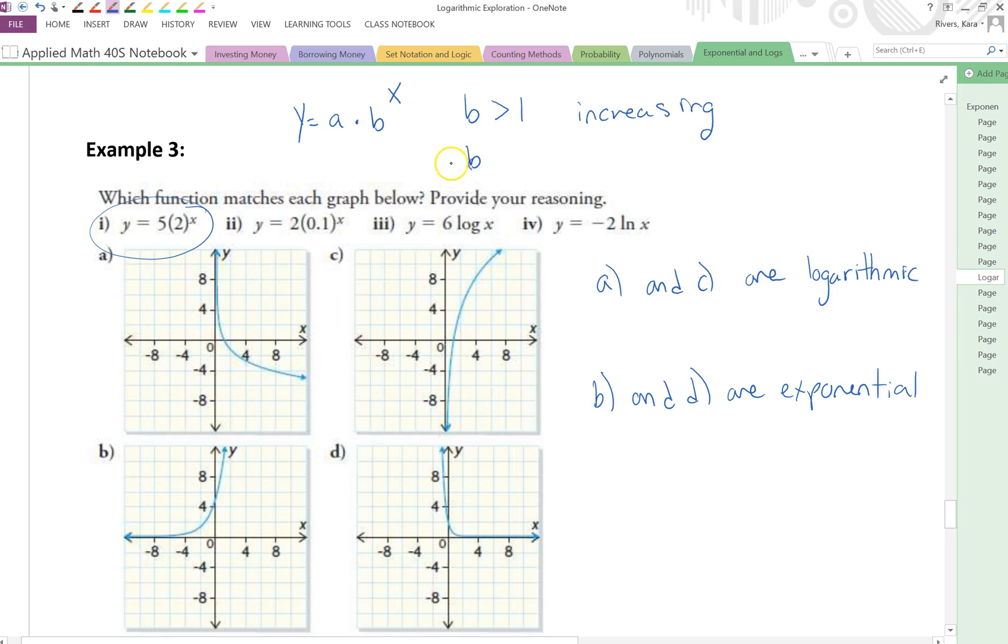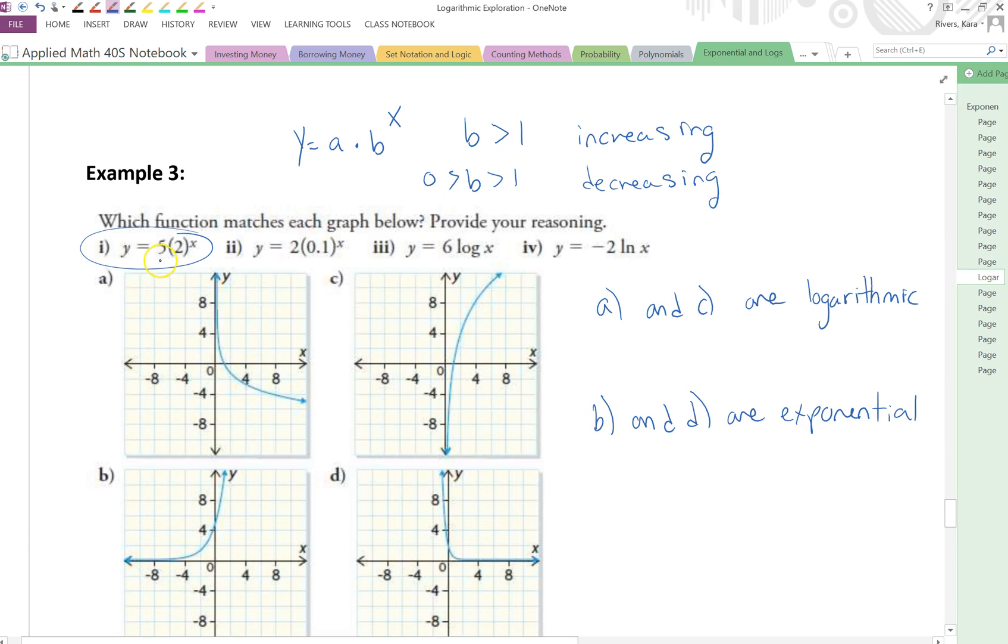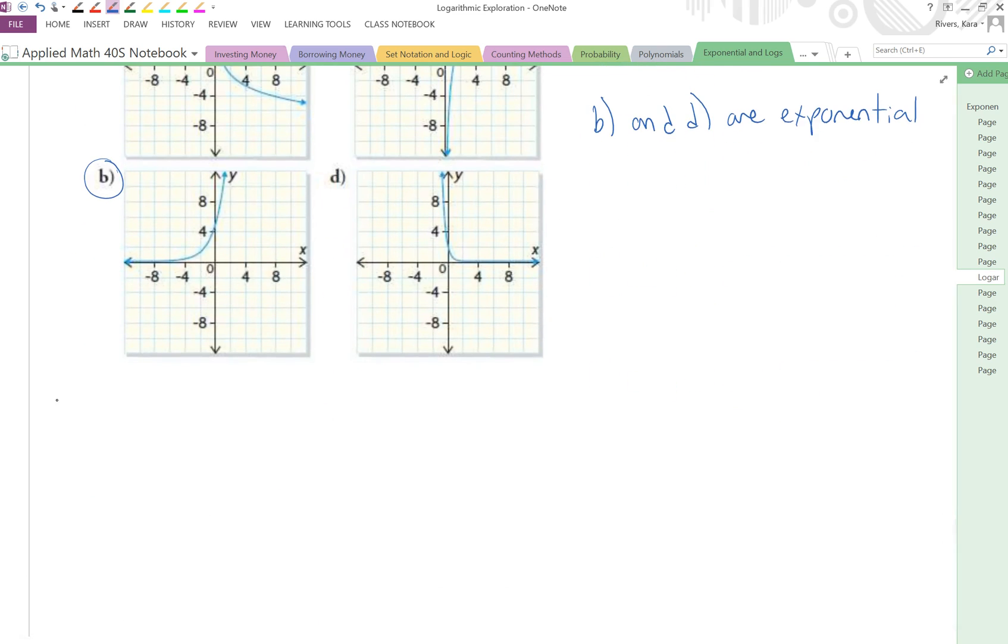And I know if B is between 0 and 1, then it's decreasing. So I know that equation 1 then matches graph B, because graph B is the only exponential function that's increasing.